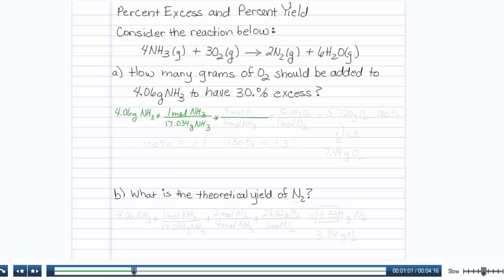I need to get this to moles of oxygen. So there are 4 moles of NH3 for every 3 moles of oxygen.